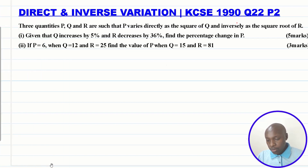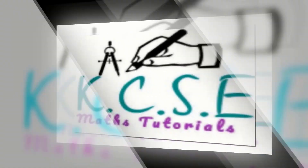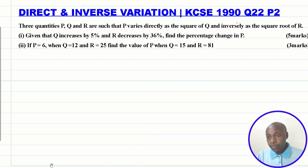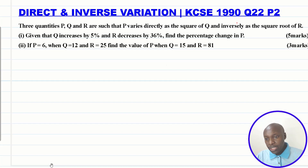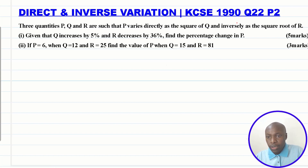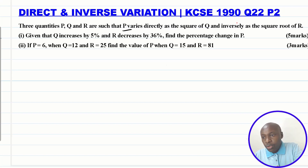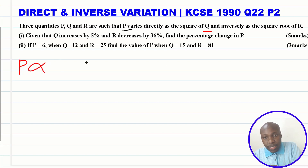Let's go straight to the solution, beginning with part one — finding the percentage change in p given that q increases by five percent and r decreases by 36 percent. The first thing to do is write the relationship connecting p, q, and r. We start by writing that p varies directly as the square of q. This sign is called the sign of proportionality.